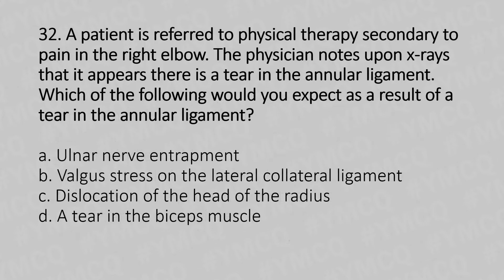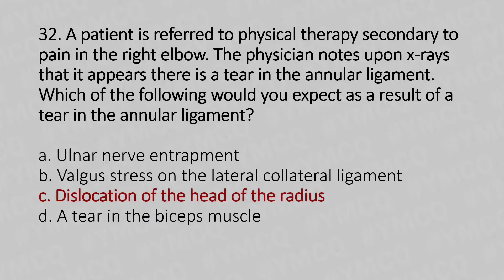Now moving to our 32nd question. A patient is referred to physical therapy secondary to pain in the right elbow. The physician notes on x-ray that there appears to be a tear in the annular ligament. Which of the following would you expect as a result of a tear in the annular ligament? Option A: Ulnar nerve entrapment. Option B: Valgus stress on the lateral collateral ligament. Option C: Dislocation of the head of the radius. Option D: A tear in the biceps muscle. The answer is Option C, dislocation of the head of the radius.